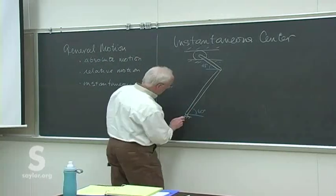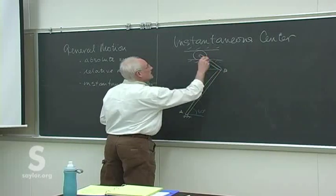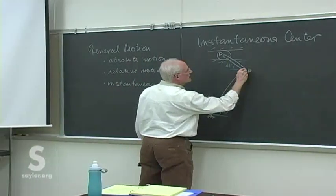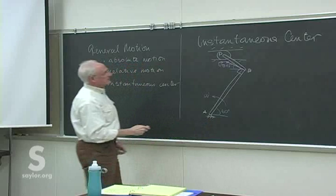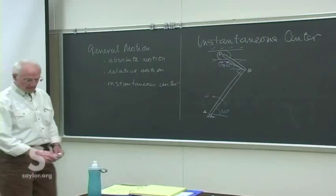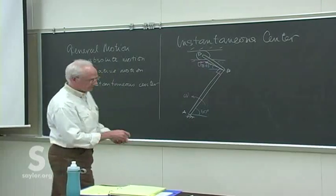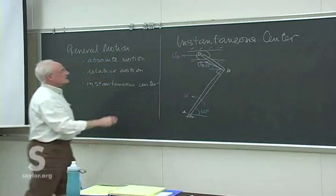We know, due to the rotation of the lower arm — this was A, B — that point B is moving in that direction. It must, because it's in pure rotation about point A. We also know the direction of motion of point D, which is in the horizontal direction because it's constrained to the horizontal track.